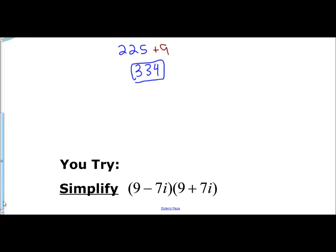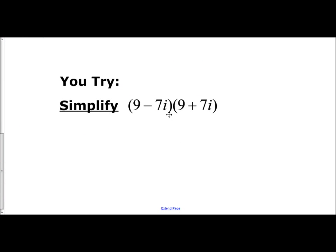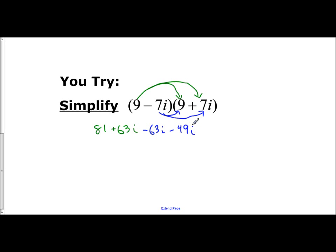Let's look at one more: 9 minus 7i times 9 plus 7i. Try to find the pattern — try and find the shortcut related to something we know. If you do the whole process: 9 times 9 gives 81, 9 times 7i gives 63i, so you get 81 plus 63i. Then negative 7i times 9 gives negative 63i, and negative 7i times 7i gives negative 49i squared.